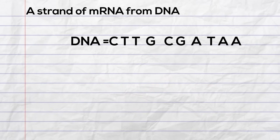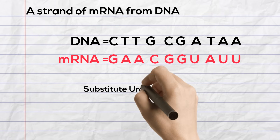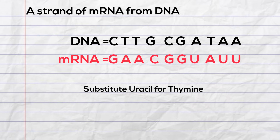Now during protein synthesis, a strand of messenger RNA is created from the DNA, so let's write what the strand of RNA would look like from this strand of DNA. Remember with messenger RNA you substitute a uracil for a thymine, so whenever you have adenine — represented by A — instead of writing T you write a U for uracil.